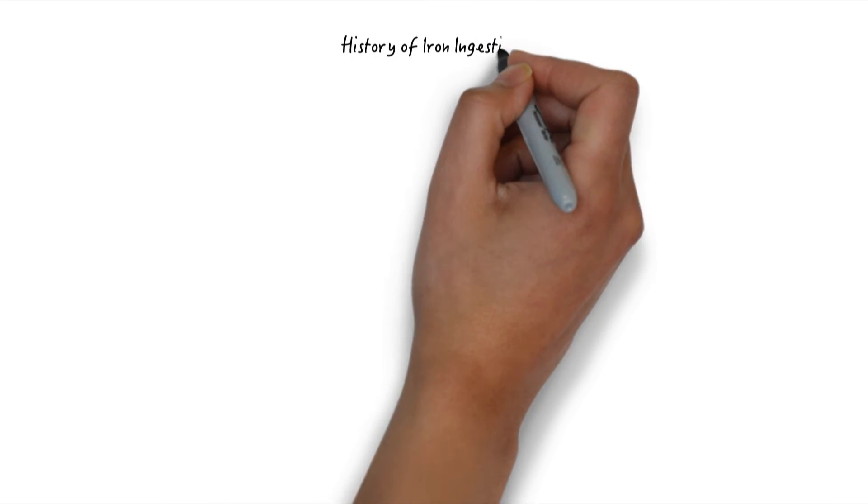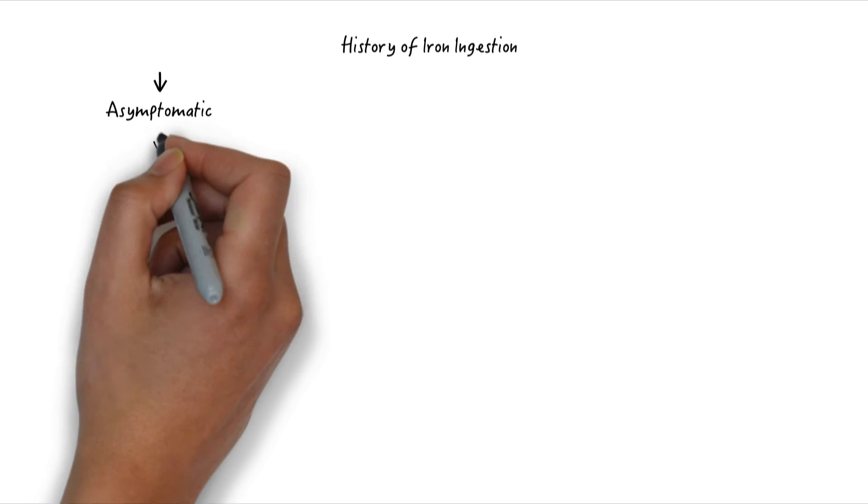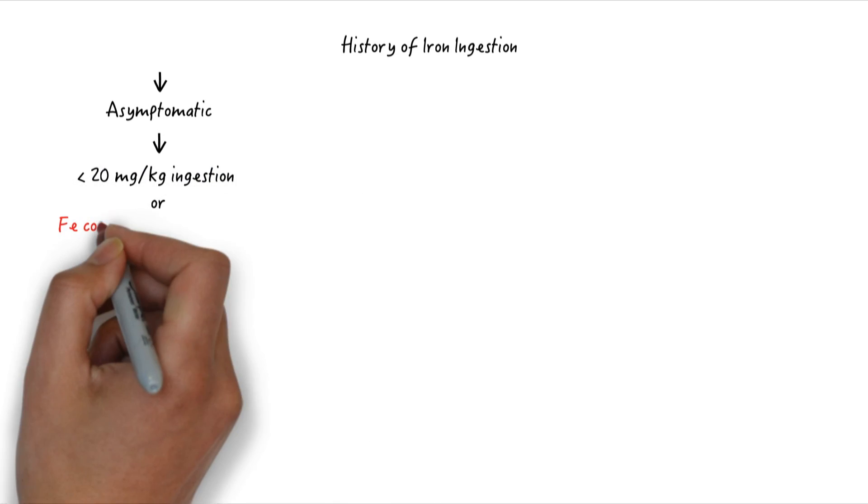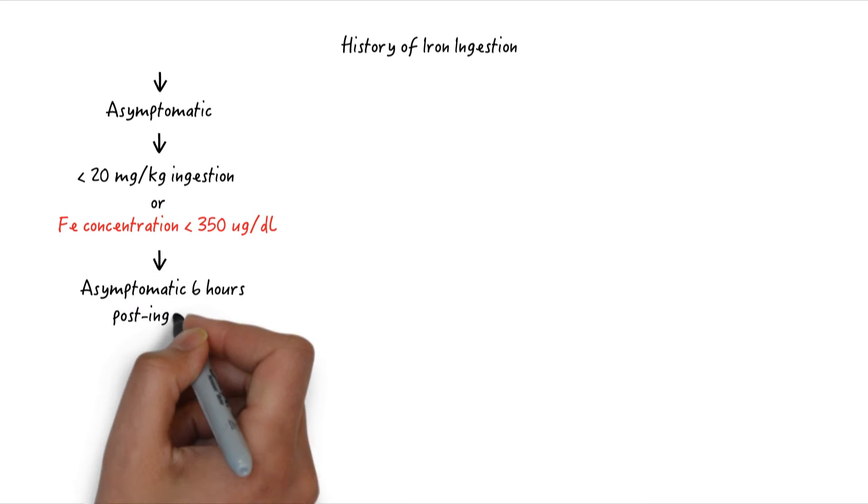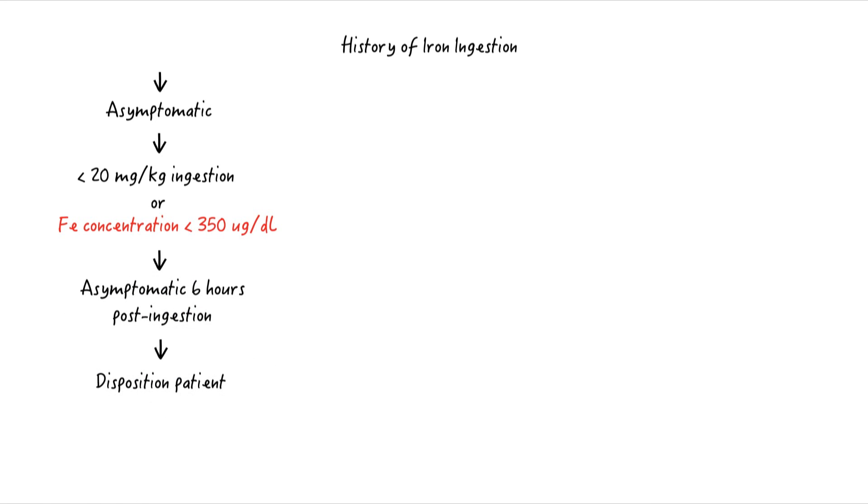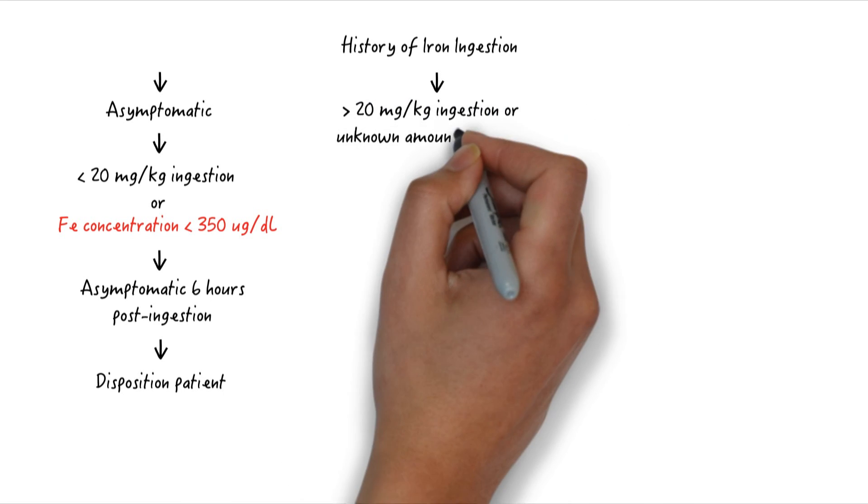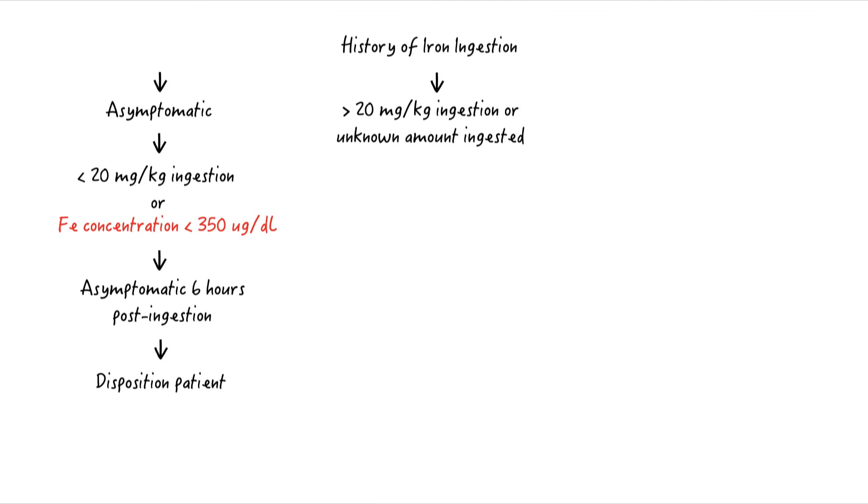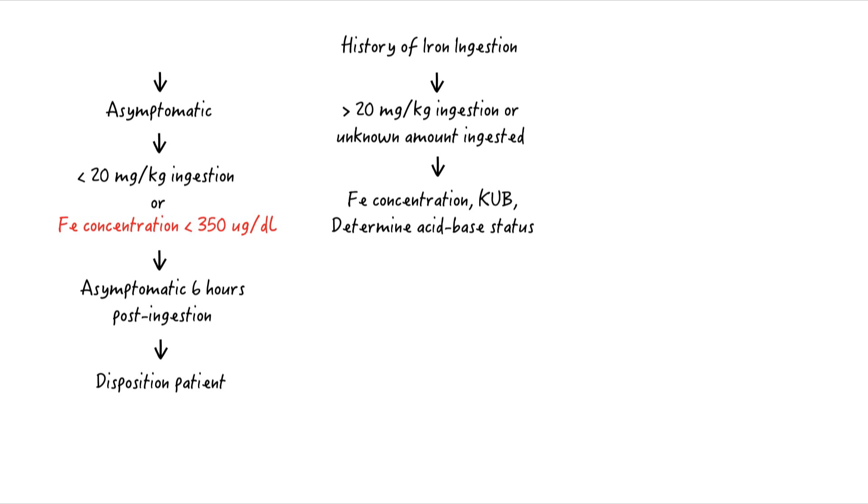Let's review the iron treatment algorithm. For the asymptomatic patient with a history of small ingestion of under 20 milligrams per kilogram, if no GI symptoms develop within the first six hours, the patient can be dispositioned home or to a psychiatric care facility as appropriate. For ingestion of more than 20 milligrams per kilogram, or if GI symptoms are present, obtain iron concentration, check acid-base status, and look for visible iron pills on KUB.